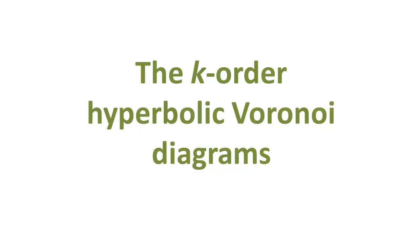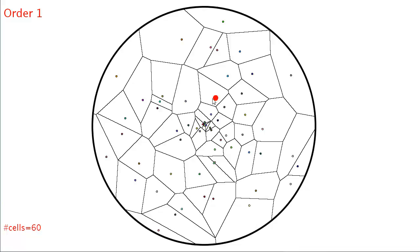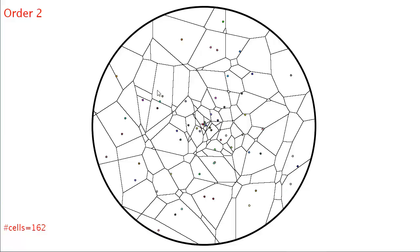The k-order hyperbolic Voronoi diagrams. This is the first-order diagram. When we click at some position, it shows the closest neighbor in red. Since the Klein hyperbolic Voronoi diagram is affine, its k-order is also affine. Let us increase the order k of the diagram.